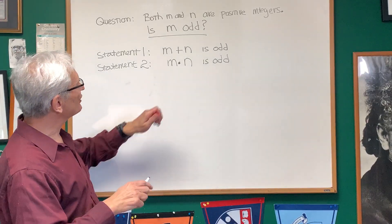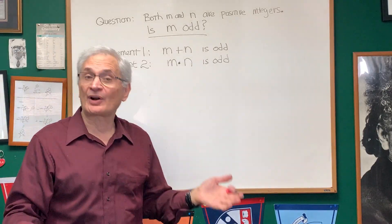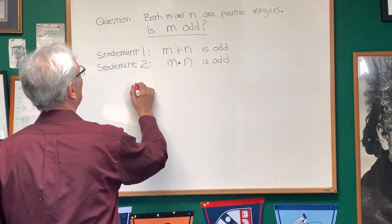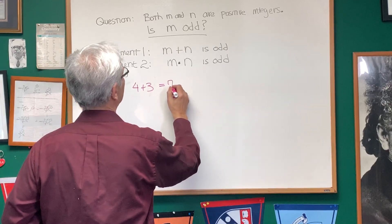Okay, well, let's look at the situation here. Let's look at statement one. M plus N is odd. What would that be? Think of two numbers that add up to an odd number, like four plus three. Well, four plus three is odd, right? Four plus three is seven.